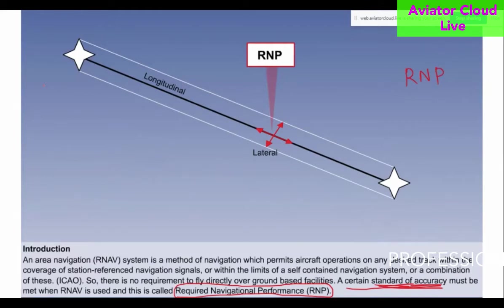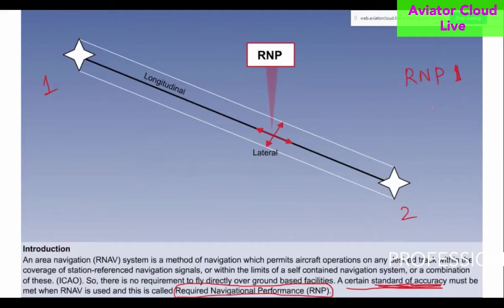Here we can see two waypoints, and you can see those white lines and the black line in the middle — that is the track. You have to be within a certain accuracy, and that standard of accuracy must be met. Let's say RNP 1 — it means your aircraft should be able to fly within an accuracy of plus or minus 1 nautical mile. It shouldn't deviate more than 1 nautical mile to the right or to the left. The position of the aircraft must be within a 1 nautical mile radius.